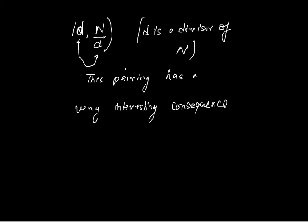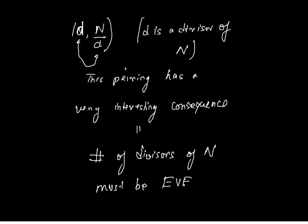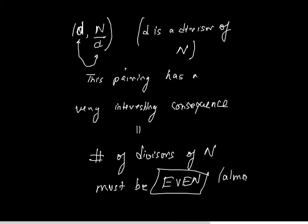And what is that? The consequence is this: that the number of divisors of n must be even. Well, we have to be a little cautious here. I'll just place 'almost always' here because I'll show why I say almost always.